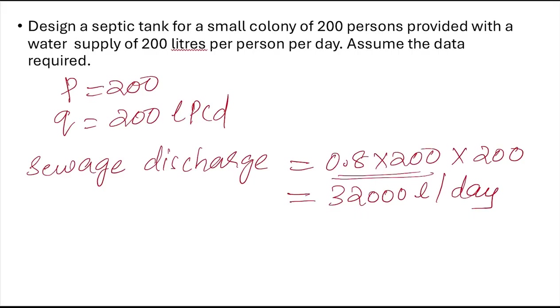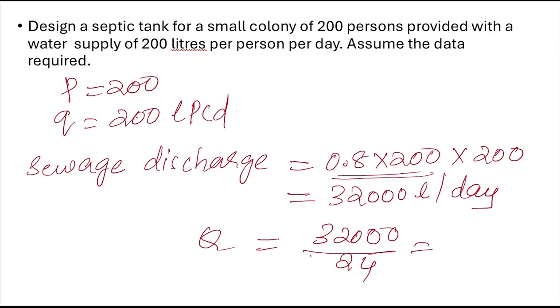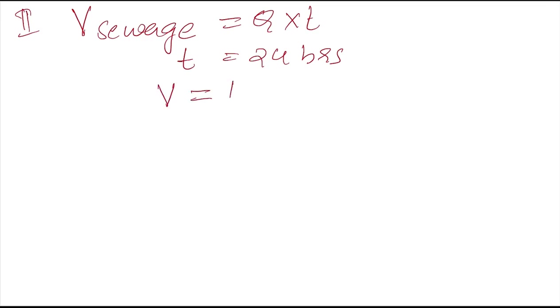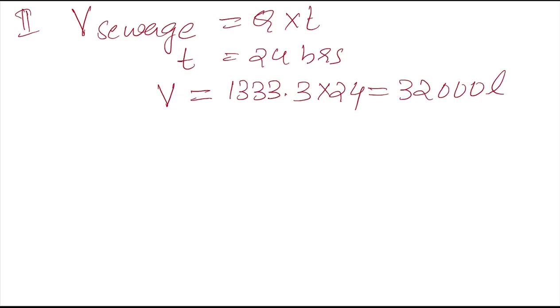The sewage discharge is per day. You can convert it to per hour by dividing by 24, giving approximately 1333 liters per hour, though this is not mandatory here. The second step is to calculate the volume of sewage, which equals discharge multiplied by detention time. Since the detention period is not mentioned in the question, we assume it as 24 hours. So the total volume of sewage equals 32,000 × 1 day = 32,000 liters.